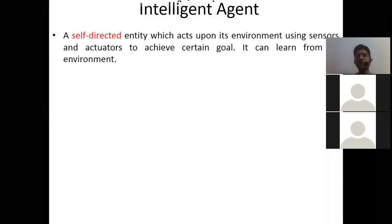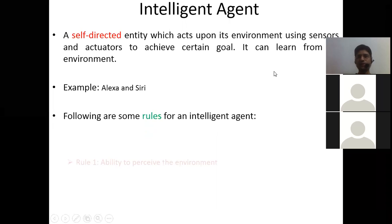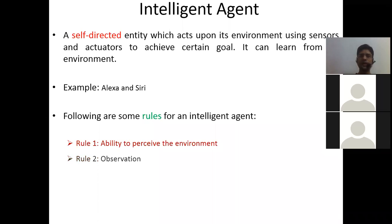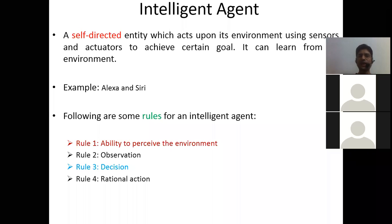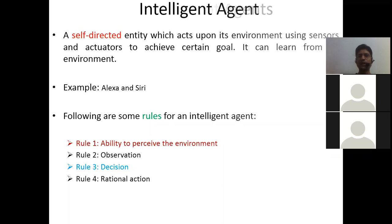An intelligent agent is a self-directed entity which acts upon the environment using sensors and actuators to achieve certain goals. Examples are Alexa and Siri. There are four rules an intelligent agent must follow: ability to perceive the environment, observation, decision, and rational action. Rational action is very important — we will study what rationality means in the next class, including what qualifies as rational activity and how a machine can perform rational actions.